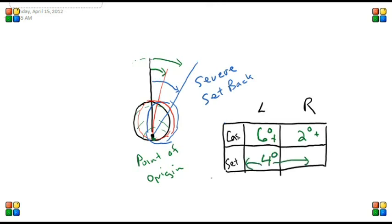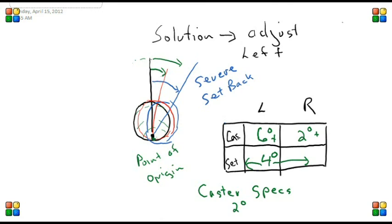And we would correct this by changing the caster on the left side. If the specifications are two degrees, to make this vehicle handle and run properly we would correct the left side caster and move it towards specifications, and that would eliminate the setback also.